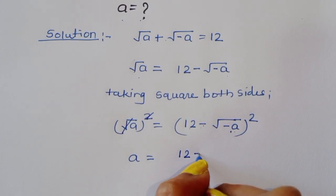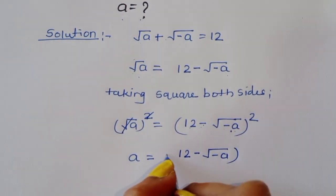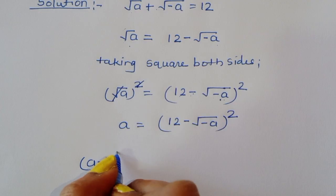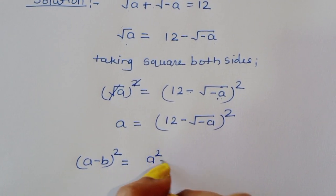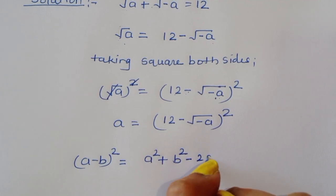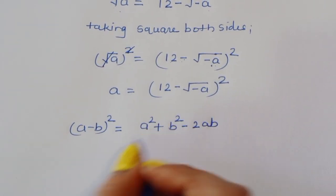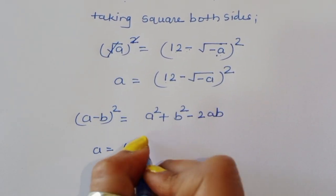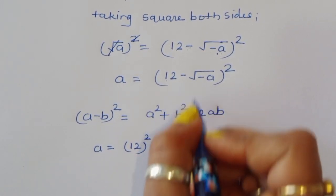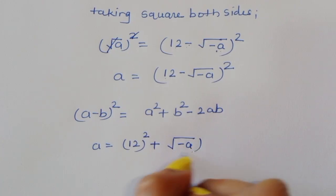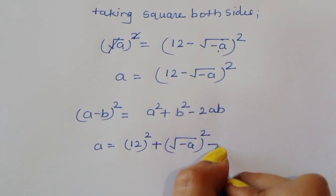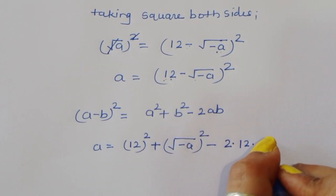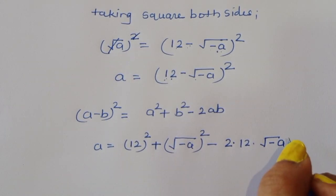We can write this as (12 − √(−a))². We know the formula (a − b)² = a² + b² − 2ab. Using this formula: a = 12² + (√(−a))² − 2 × 12 × √(−a).